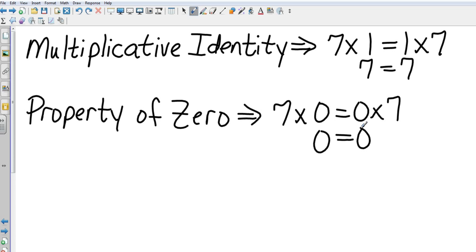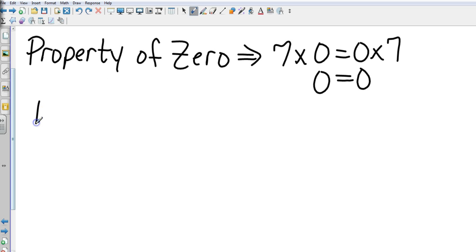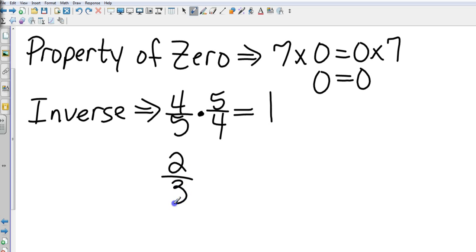Then I have the multiplicative inverse. Now think of the word inverse. If something is inverted, then it is upside down. So this is where our reciprocal comes in. If I took the number four-fifths and I multiplied by its inverse, I flip it upside down. That is always going to give me a value of one. Because the five would cancel into the five, four into the four, giving me a value of one. So the multiplicative inverse of two-thirds would be three-halves. Again, when I multiplied through, I would get one.